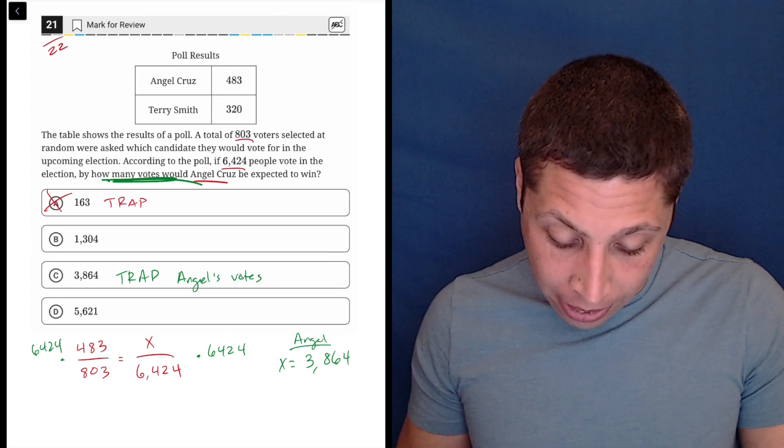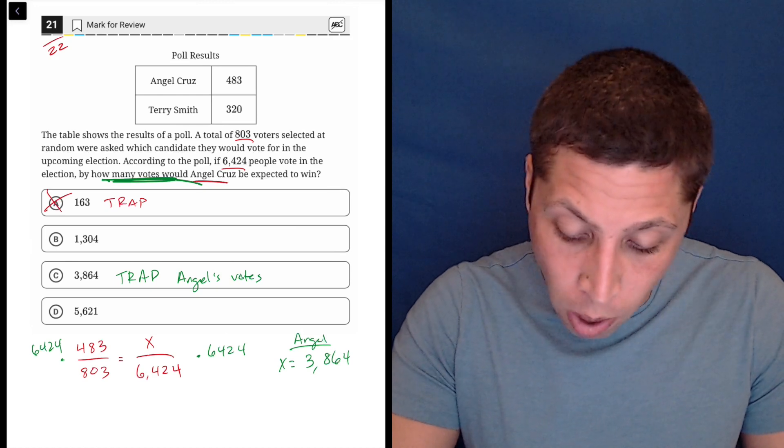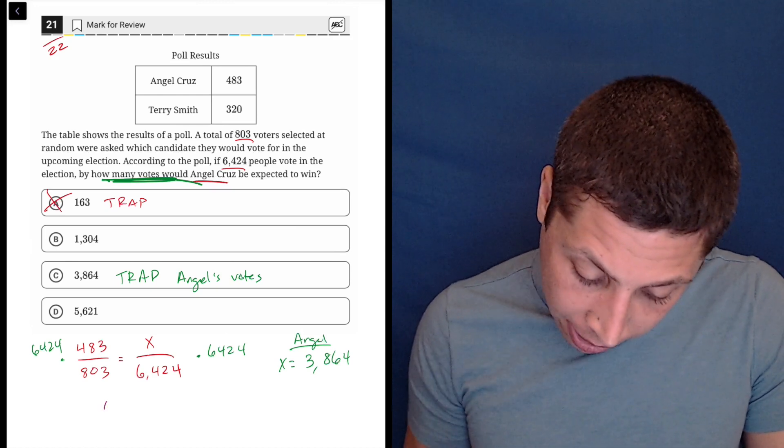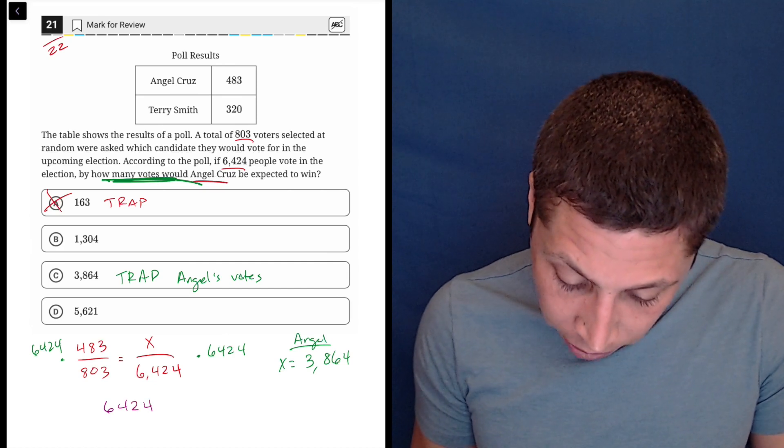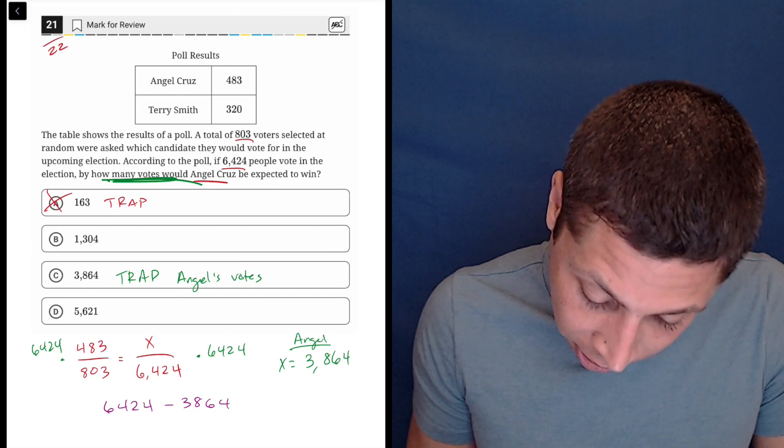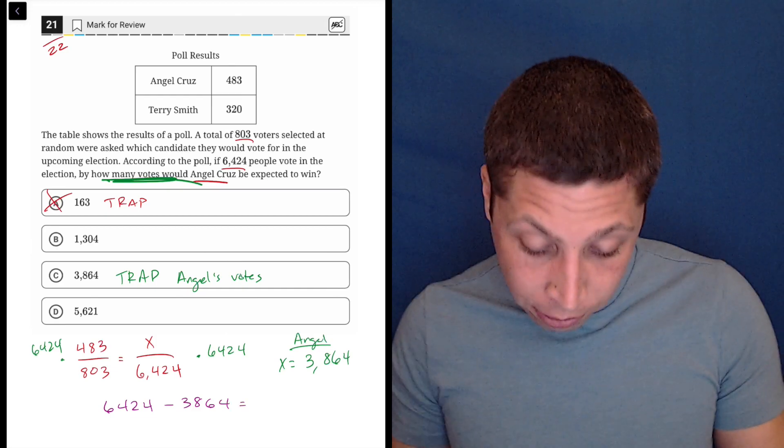So here you might just be able to estimate. If we wanted to do it more thoroughly, what I would do here is I would take my 6,424 votes, subtract out Angel's votes, 3,864, to get Terry's votes.